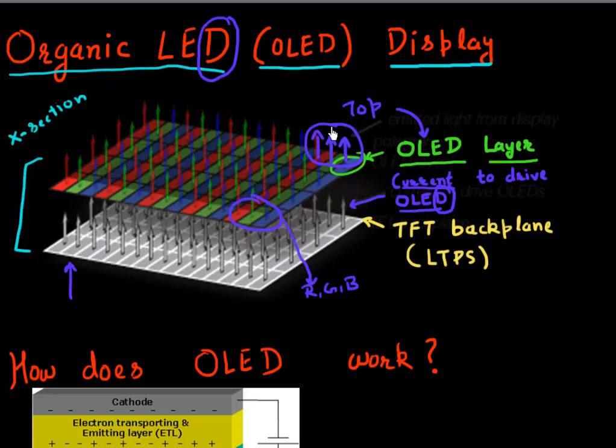As a result, since it has only few layers and the light is coming from the very top layer, these OLED-based displays have a very good viewing angle. You can view these displays at a much larger angle compared to LCD-based displays.